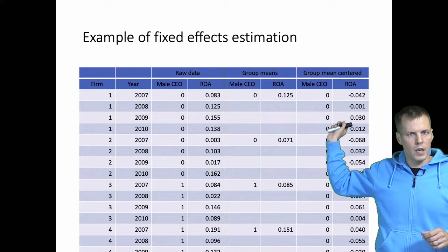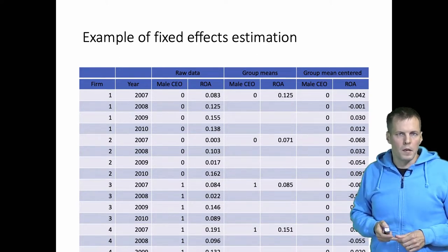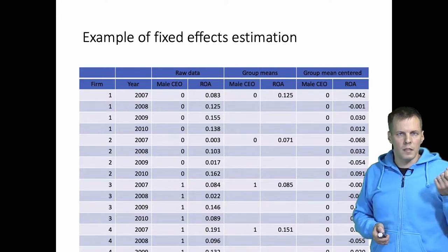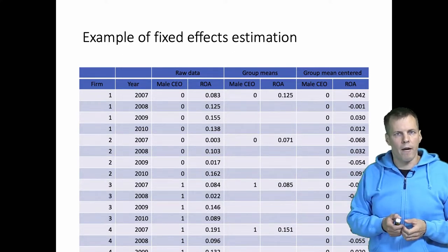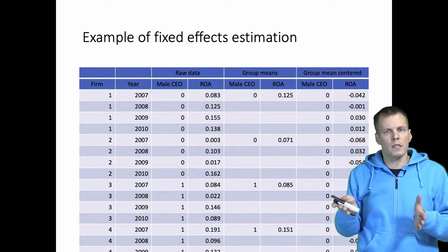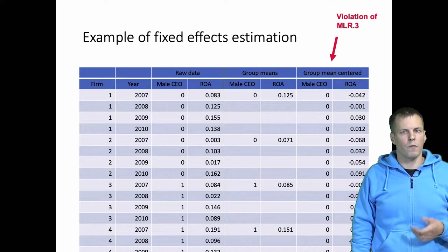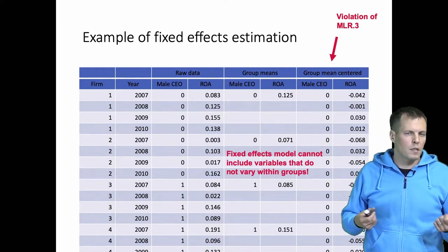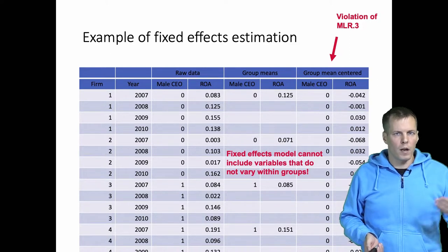After group mean centering, ROA has a mean of zero for each case and male CEO has a mean of zero for each cluster as well. This demonstrates one important feature of the GLS fixed effects approach: it requires that all variables vary within clusters. In this example, CEO gender does not vary within any company, so after cluster mean centering all values for male CEO become zero — a violation of the regression model's assumptions — and the model cannot be estimated. The GLS fixed effects approach cannot include variables that don't vary within groups.